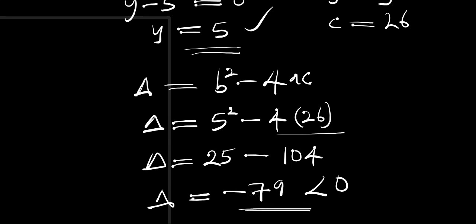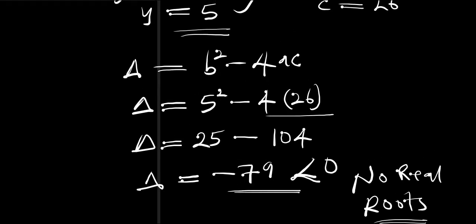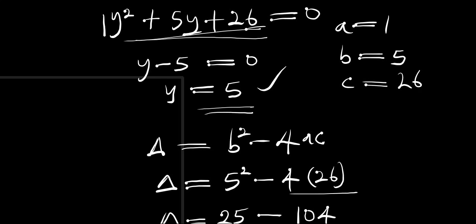The discriminant equals 25 - 104 = negative 79, and this is less than 0. When the discriminant is less than 0, we have no real roots — this gives complex roots. Since we are only looking for real roots, we discard this equation and work with y = 5.